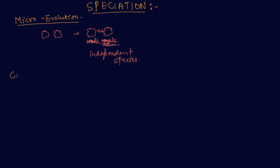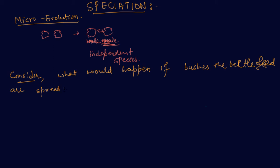Now, let's consider what would happen if the bushes the beetle feed on are spread widely over a mountain range. The beetle population becomes very large as a result.